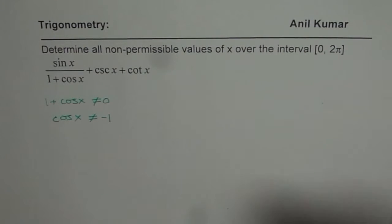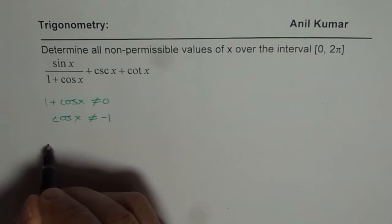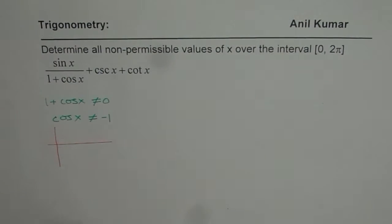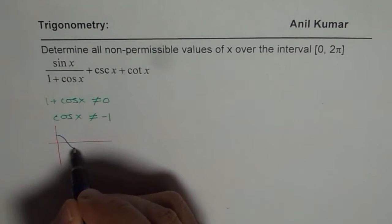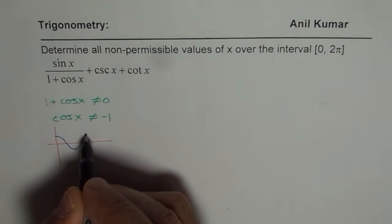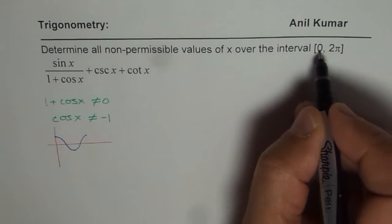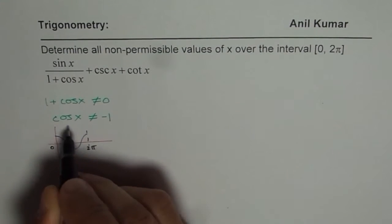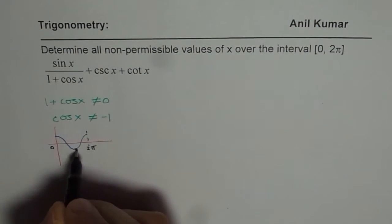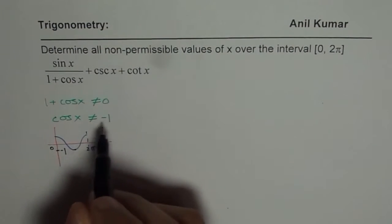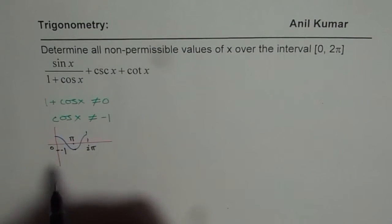You could use your calculator, but I prefer to use the basic graph of cos x. Cosine functions could be sketched like this. So this is just an approximate graph and that tells you clearly that it is 2π. We are talking about 0 to 2π. So one cycle of cosine x is kind of like this, where this point is at minus 1. So minus 1 is right in the center, π.